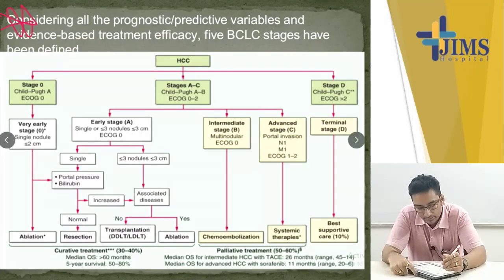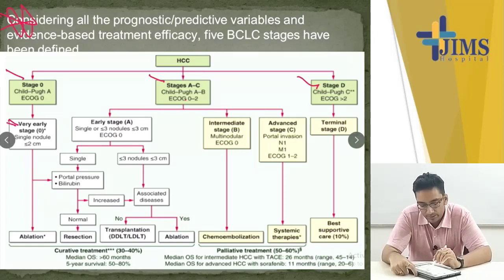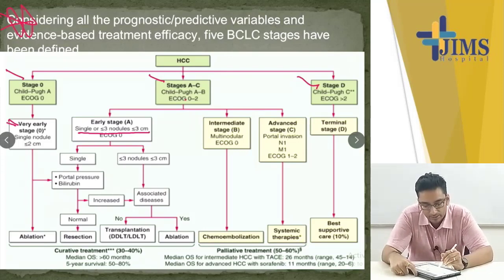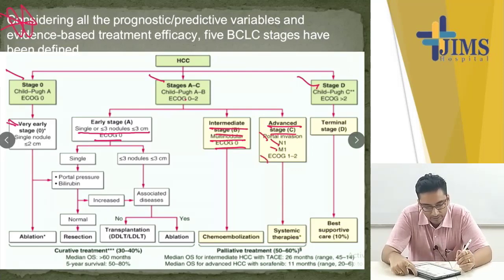Try to remember this chart. Stage 0 is very early stage — Child-Pugh A, ECOG 0 — treated with single nodule ablation. Stage A to C is Child-Pugh A to B, ECOG 0 to 2. Early stage is single or up to 3 nodules each ≤3 cm with ECOG 0. Stage B is intermediate with multinodular disease. Stage C is advanced with portal invasion, N1, M1, ECOG 0 to 2. Stage D is the terminal stage.